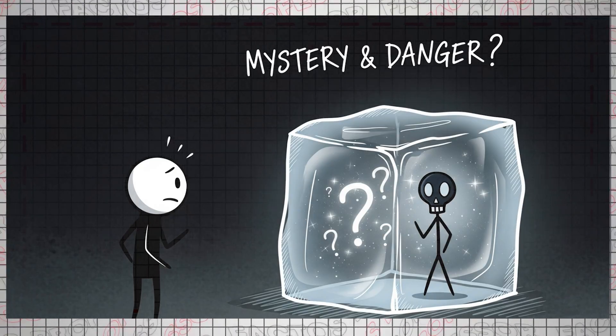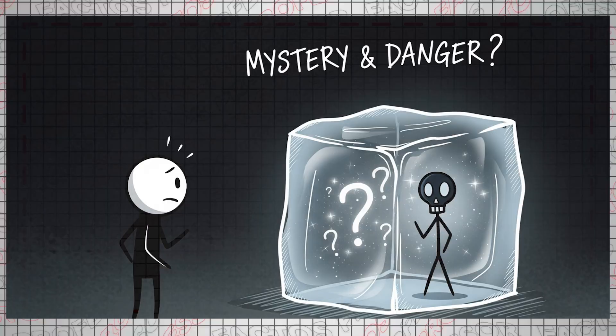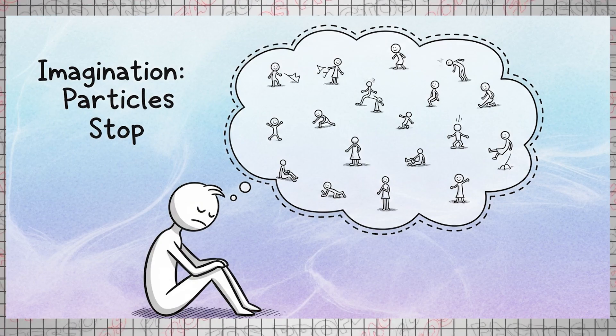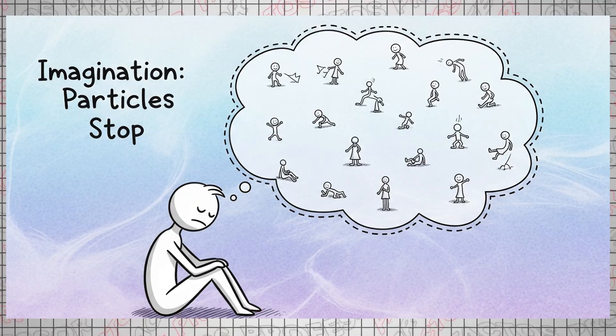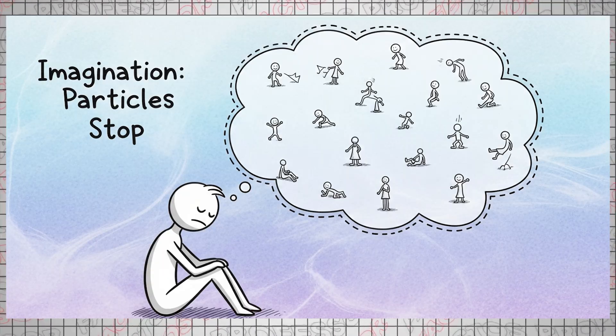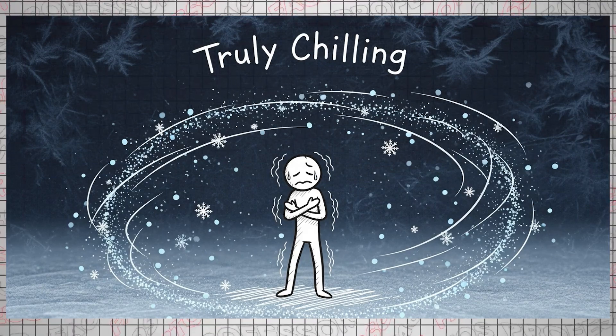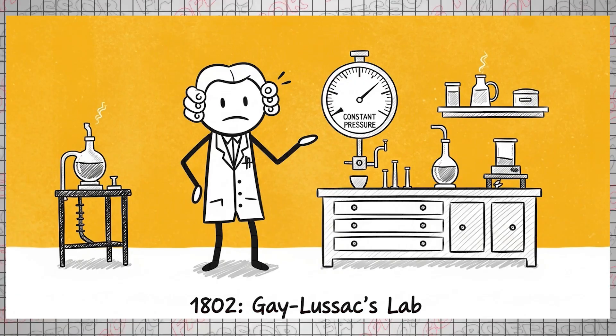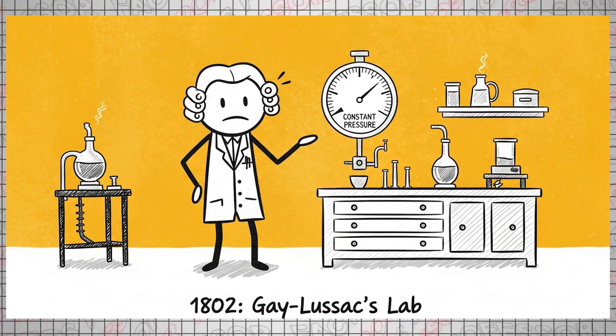So why is absolute zero considered unattainable? What do we even hope to achieve by reaching it? And what exactly is so mysterious about absolute zero that we've been hinting at its dangers throughout this video? Absolute zero is easily achievable in our imagination by simply assuming that all particles of matter stop moving. And this is where things get truly chilling.